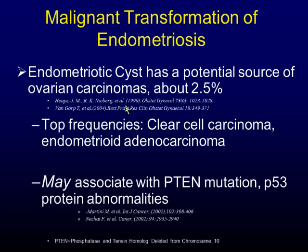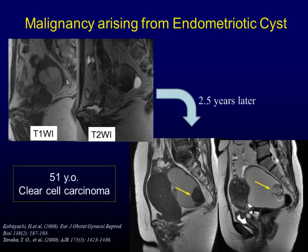Endometriosis has a potential for malignant transformation, and the risk is about 2.5%. The cancer can occur in gonadal and extra-gonadal sites, resulting in a wide histological range of tumors. The most frequent cancers are clear cell carcinoma and endometrioid adenocarcinoma. Recently, chromosomal abnormalities and P53 protein abnormalities are thought to be related with malignant transformation. Clinical and imaging risk factors include age over 40 years, enlarged cyst size, lack of shading on T2-weighted image, and the emergence of enhanced mural nodules with internal intermediate signal intensity on T2-weighted image.